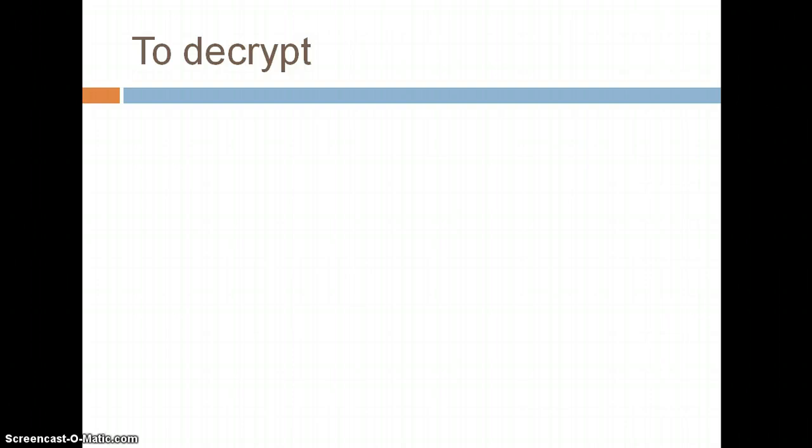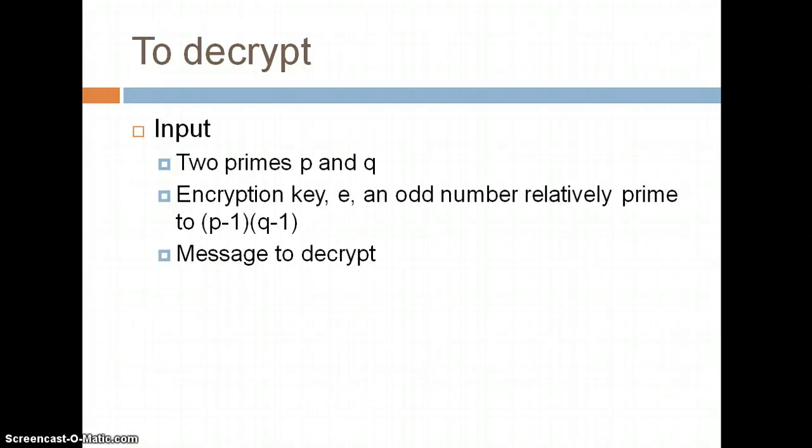To decrypt a message, I would know what the two primes p and q were. They should be random and large. And then I would have made the encryption key, which is e, an odd number that should be relatively prime to (p-1)(q-1). And then I would need the message that I wanted to decrypt. My output would be the decrypted message, and also just for fun, I had it output the decryption key, even though really you wouldn't need to have that outputted.